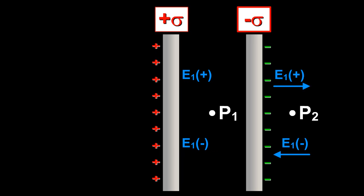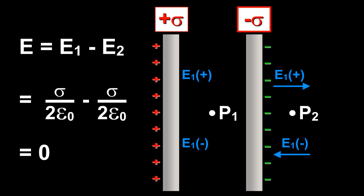At point P2 outside the sheets, the electric field will be equal in magnitude and opposite in direction. The resultant field at P2 is E = E1 - E2 = σ/(2ε₀) - σ/(2ε₀) = 0.